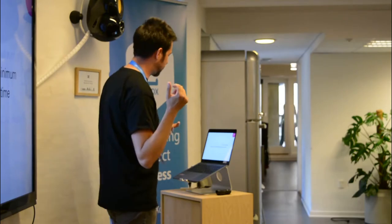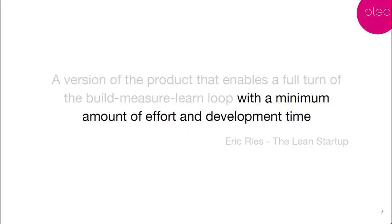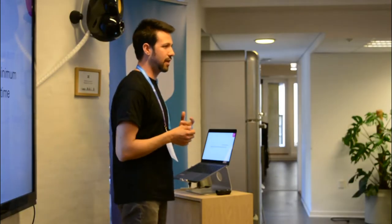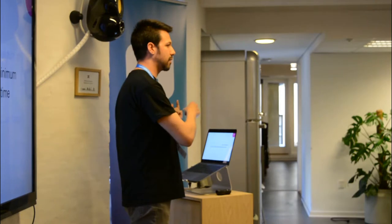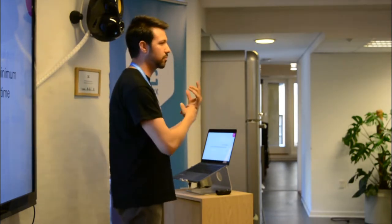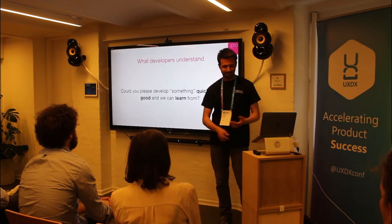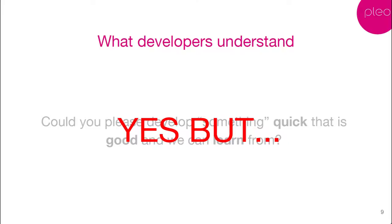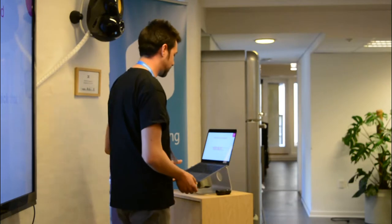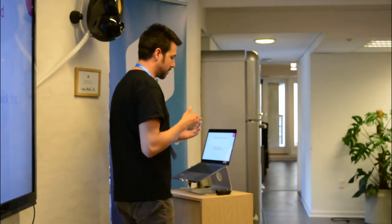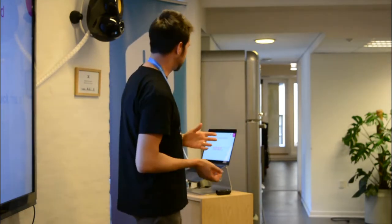But then on the other side, you get 'with a minimum amount of effort and development time' — it's like, okay, there's something wrong in this definition. I have to build something I can work with in a month, but I have to do it in less than a month because that's what they're asking. So that's what we understand in the end: could you please develop something quickly and well enough that we can learn from? There are some concerns that, as developers, we have to raise because it's not simple to build.